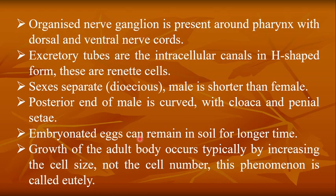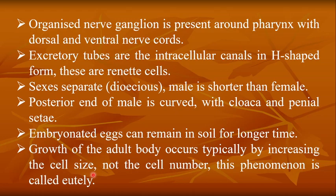Embryonated eggs can remain in the soil for a long time. After laying, the eggs remain in an embryonated stage and when favorable conditions arise, they hatch and the adult Ascaris emerges. Growth of the adult body occurs by increasing cell size, not cell number — this phenomenon is called eutely.